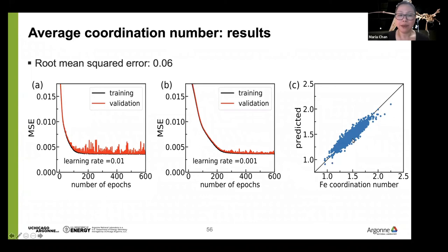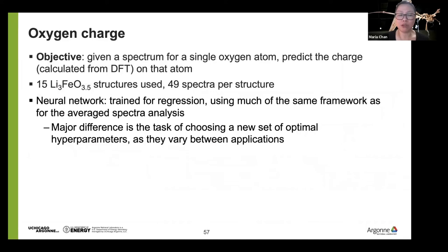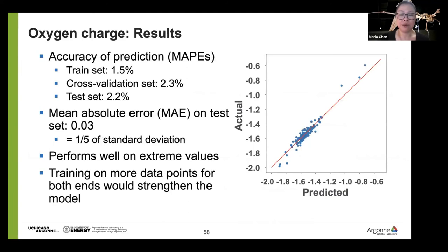We also predict the oxygen charge state from XANES. The approach is very similar — individual atom absorption spectra mapped to DFT-computed charges. The mean absolute error is about 0.03 on a charge range from approximately minus one (peroxide-like) to minus two (oxide-like), representing a few percent accuracy in predicting the oxygen charge as measured by DFT.